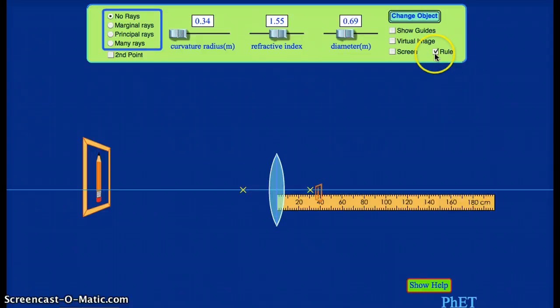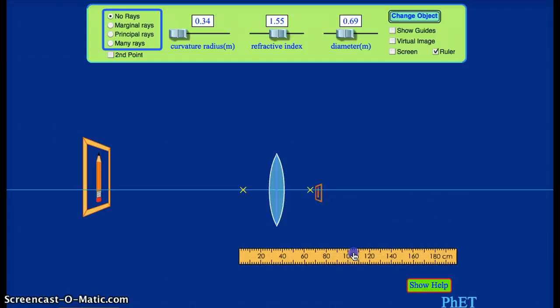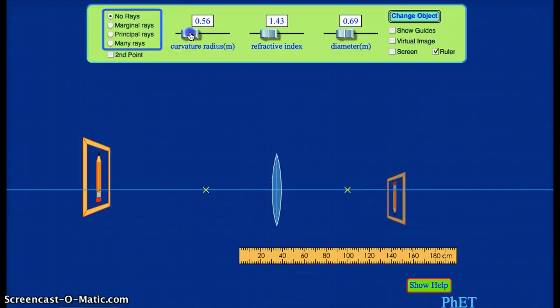Also notice, there's a ruler I can bring up here. So I can use this simulation to check some of my calculations. For instance, the problem that you just solved a moment ago. The lens had a refractive index of 1.43, and the radius of curvature, both sides had the same radius of curvature of 78 centimeters.